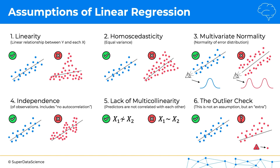So there we go — those are the assumptions of linear regression. In this course, we're going to assume by default that they are correct for all the datasets that we work with. However, when you're working with your own datasets, it's important to do these checks to make sure you're building a linear regression when it is fit for the dataset.